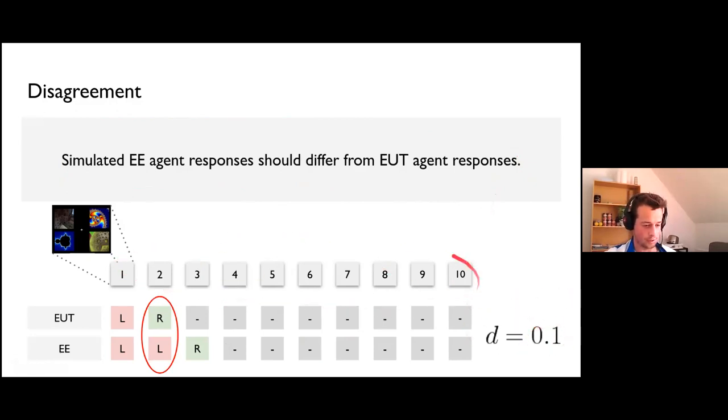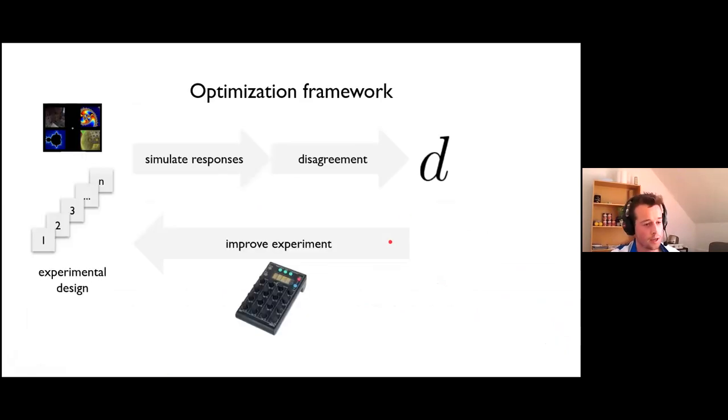The disagreement really combines these two ideas into one. It combines the idea of the difference between models and the effect of ending the experiment too soon because of the large growth rates associated with fractals. In this case, the disagreement would drop to 0.1. Therefore, this design would be worse. These three things really give us the optimization framework. It goes like this: we got some experimental design which consists of trials, of fractals, and so on. Then we can simulate responses, calculate the disagreement between competing models, and then we can improve.